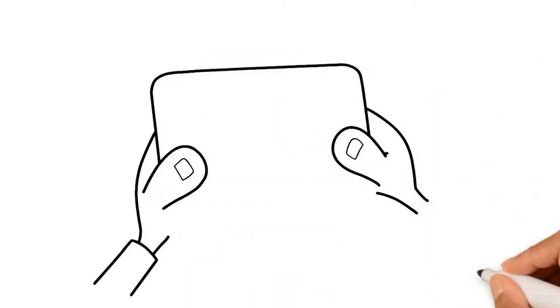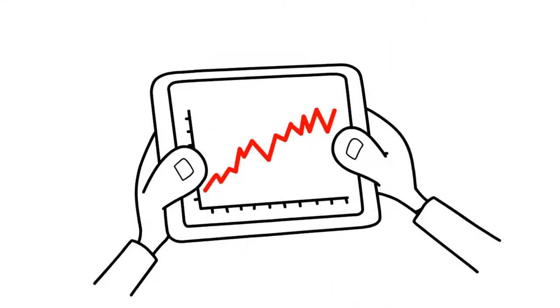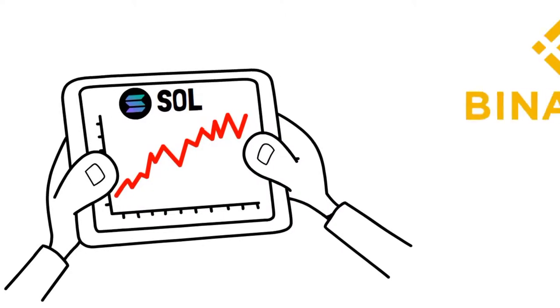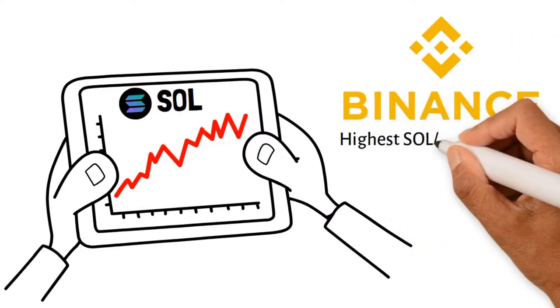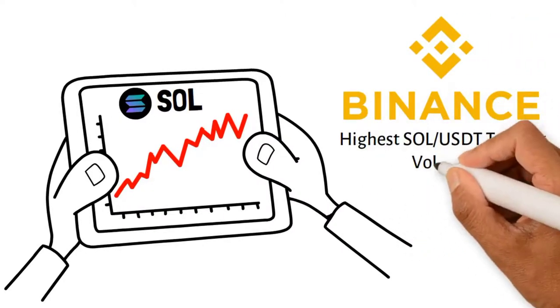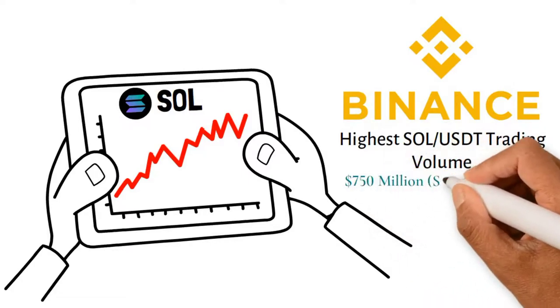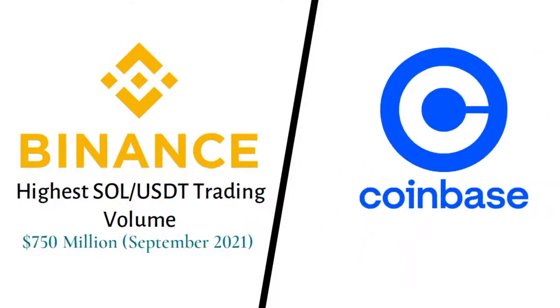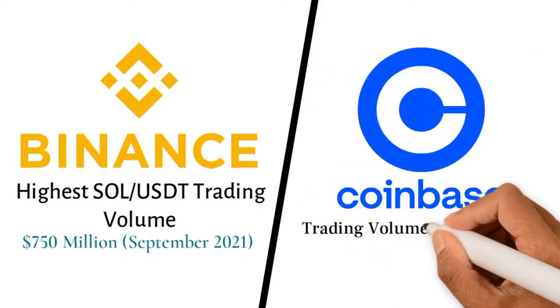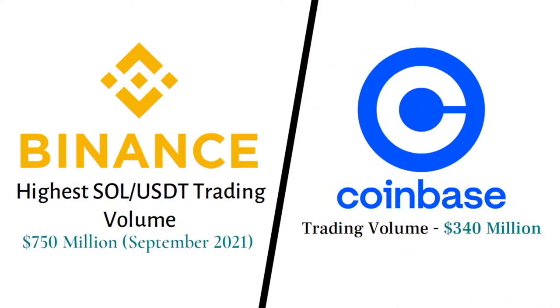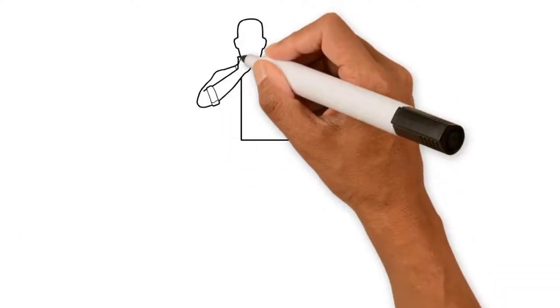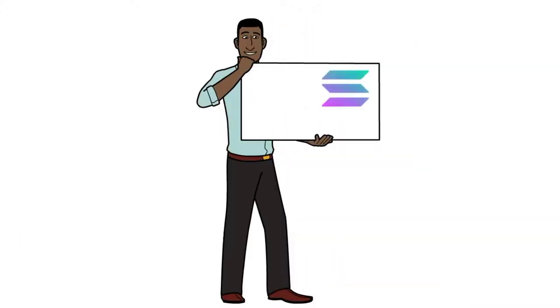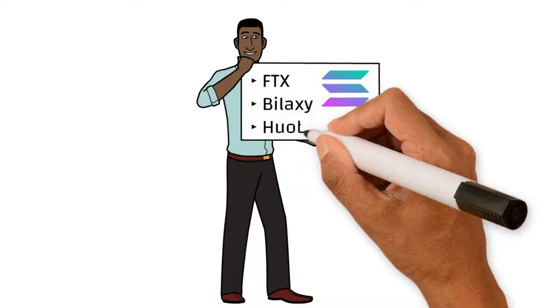Sol tokens can be purchased on most exchanges. One choice to trade Solana is on Binance, as it has the highest SOL/USDT trading volume, almost 750 million dollars as of September 2021. Next is Coinbase, with a trading volume of almost 340 million dollars. Other options to trade Solana include FTX, Bilaxi, and Huobi Global.